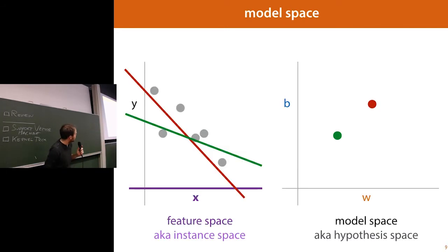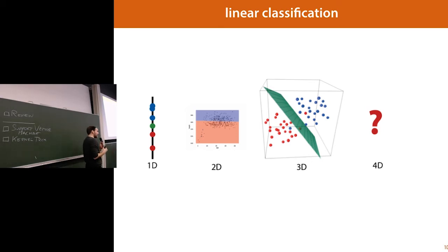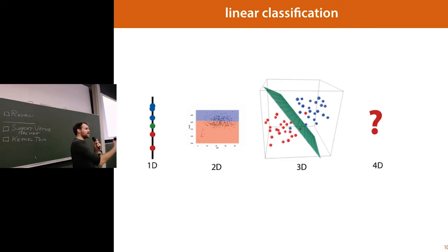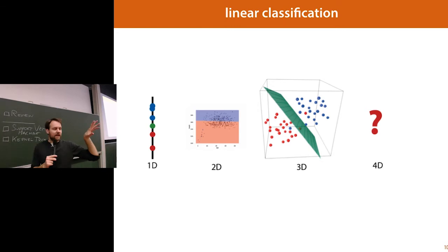Now we move from regression to classification. Our aim is no longer to predict a numeric output, but to predict a class value. If we use a linear method, we need to take our feature space and cut it in half using a line or a linear thing, so that points of one class are separated from points of another. In one dimension, cutting linearly in half means choosing a point — everything above is blue, everything below is red. In two dimensions, it means drawing a line. In three dimensions, a plane. In higher dimensions, a hyperplane. The math is just very similar to before.